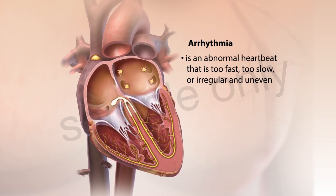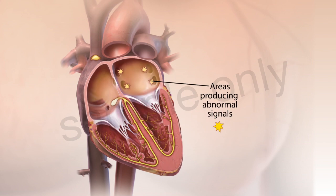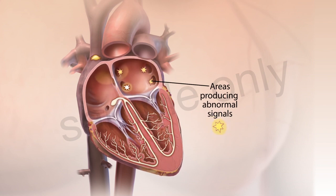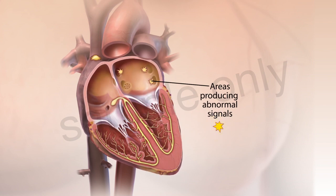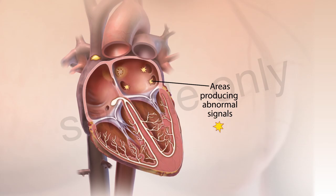Arrhythmias are caused by problems with your heart's electrical system. Abnormal electrical signals can originate in different areas of the heart, causing arrhythmias.